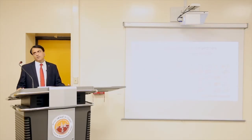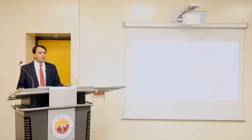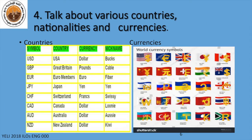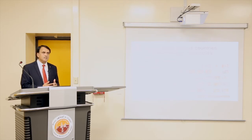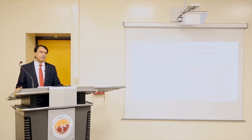Our learning objective number four is that the students should be able to talk about various countries, nationalities, and currencies. For example, the United States of America is the name of a country and its currency is dollar, which is also called by the nickname bucks. In this way, students will learn about Great Britain — the currency is pounds — Japan — the currency is yen — etc. So students should be able to understand the names of different countries and use them in their talking and writing, including different currencies.